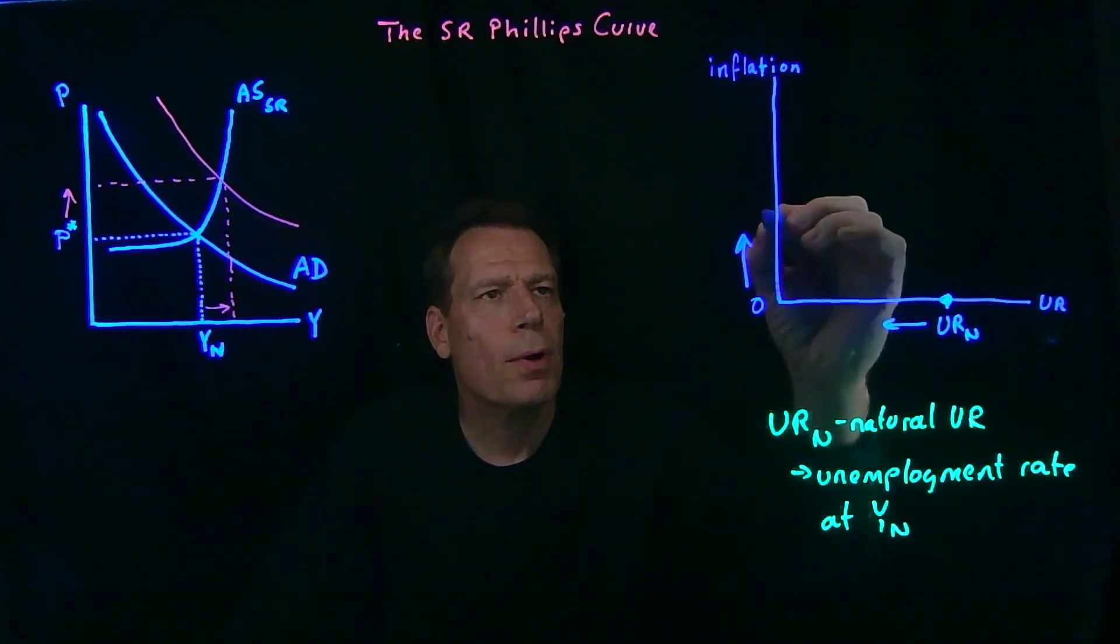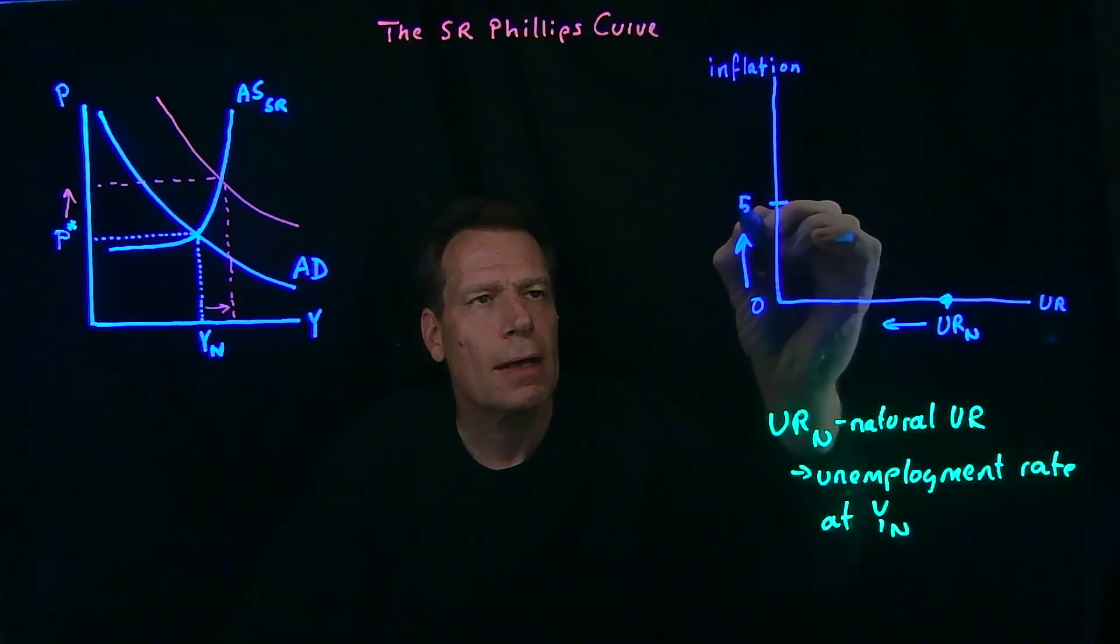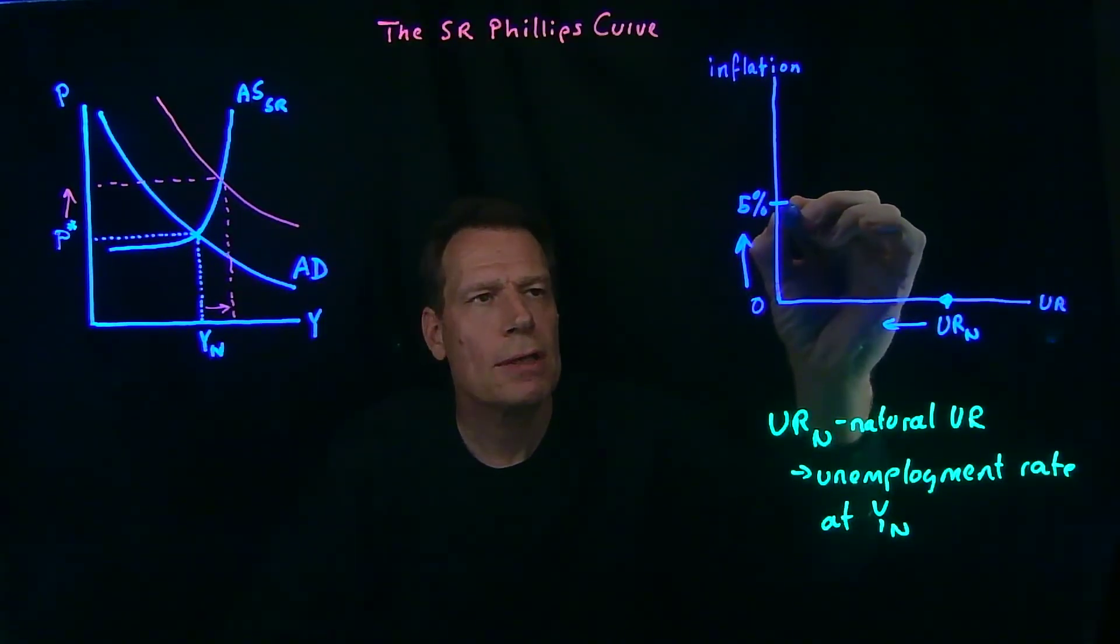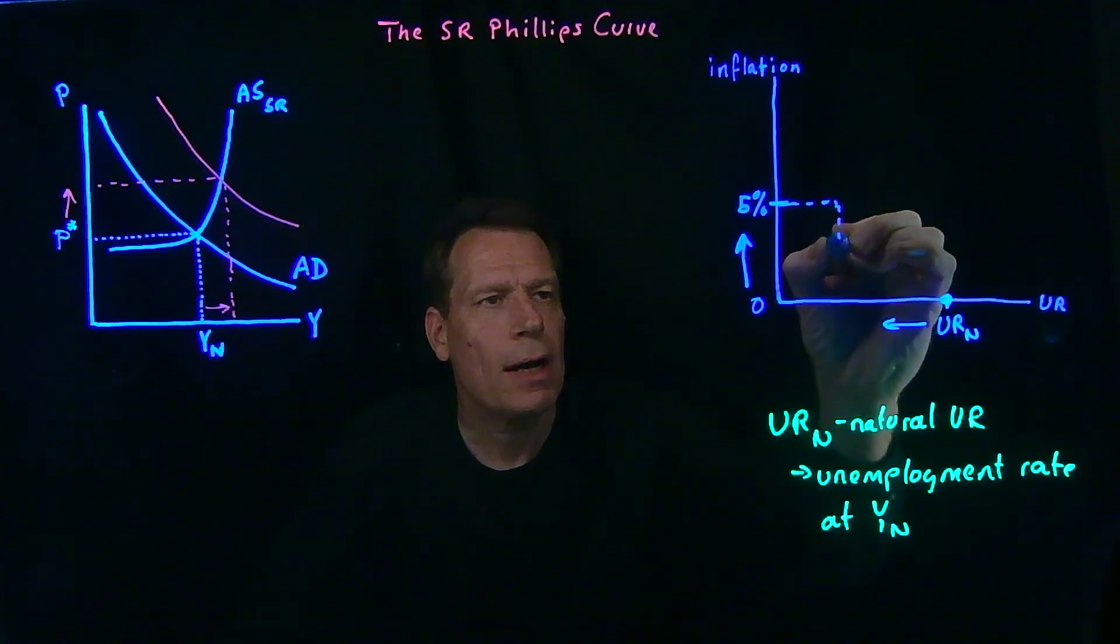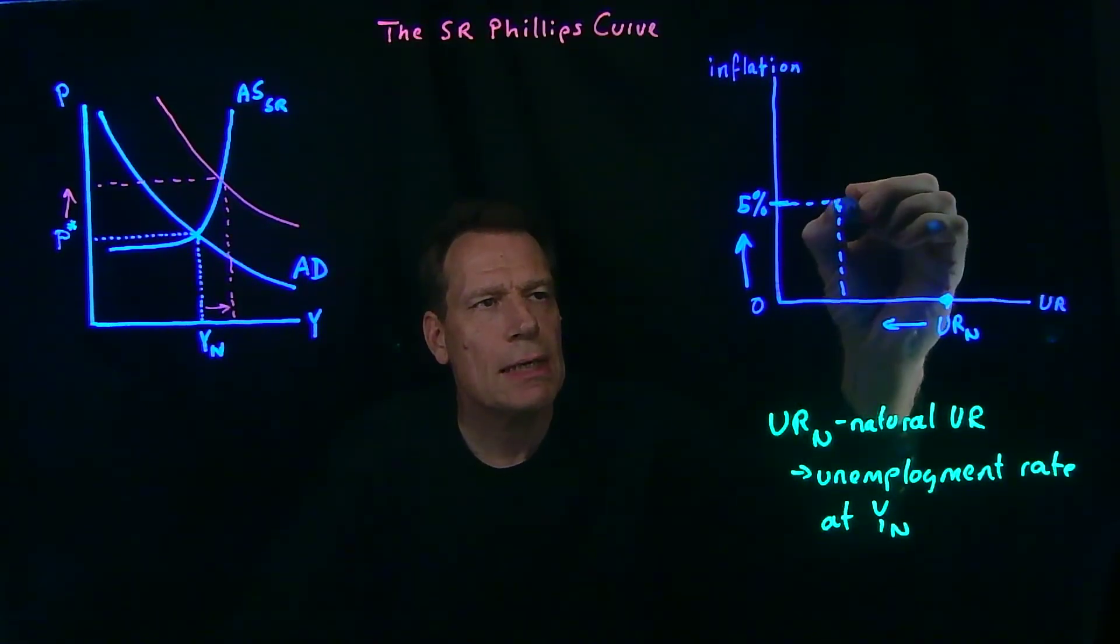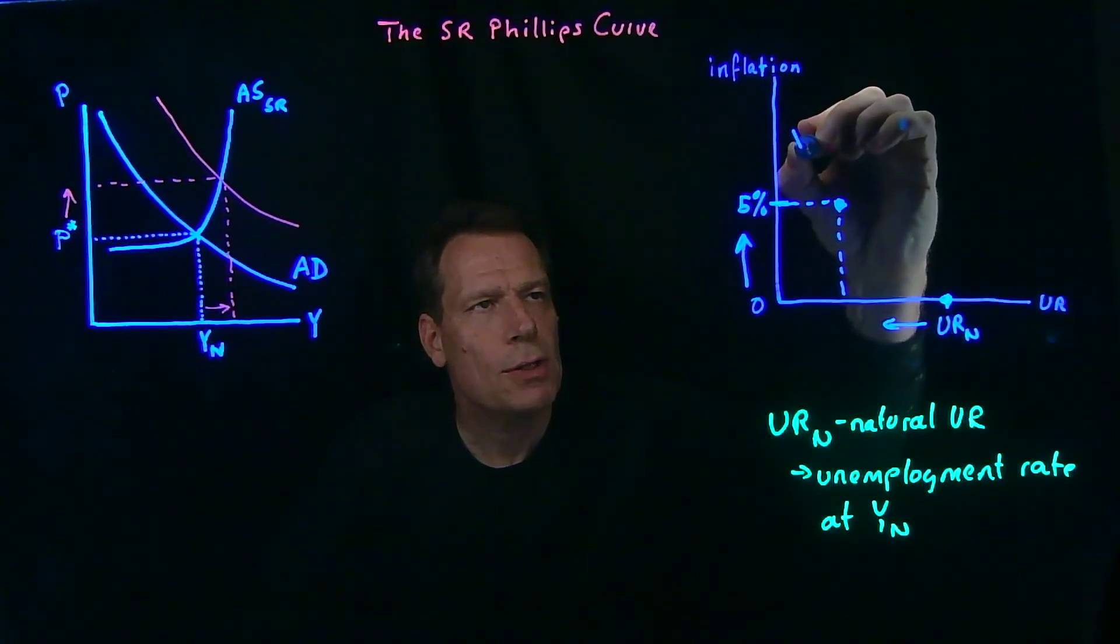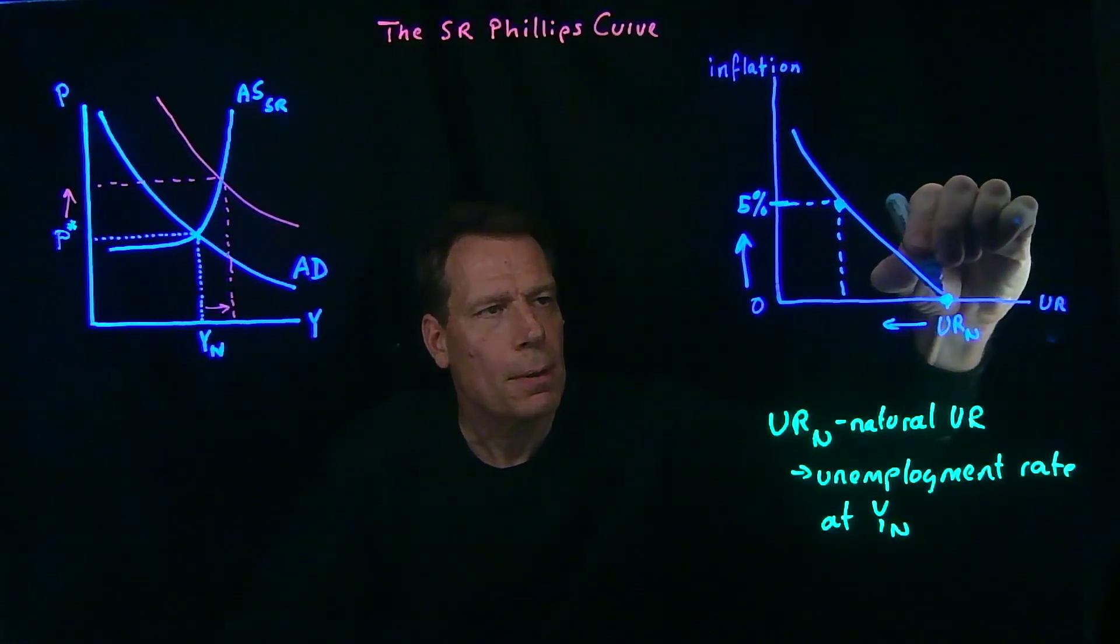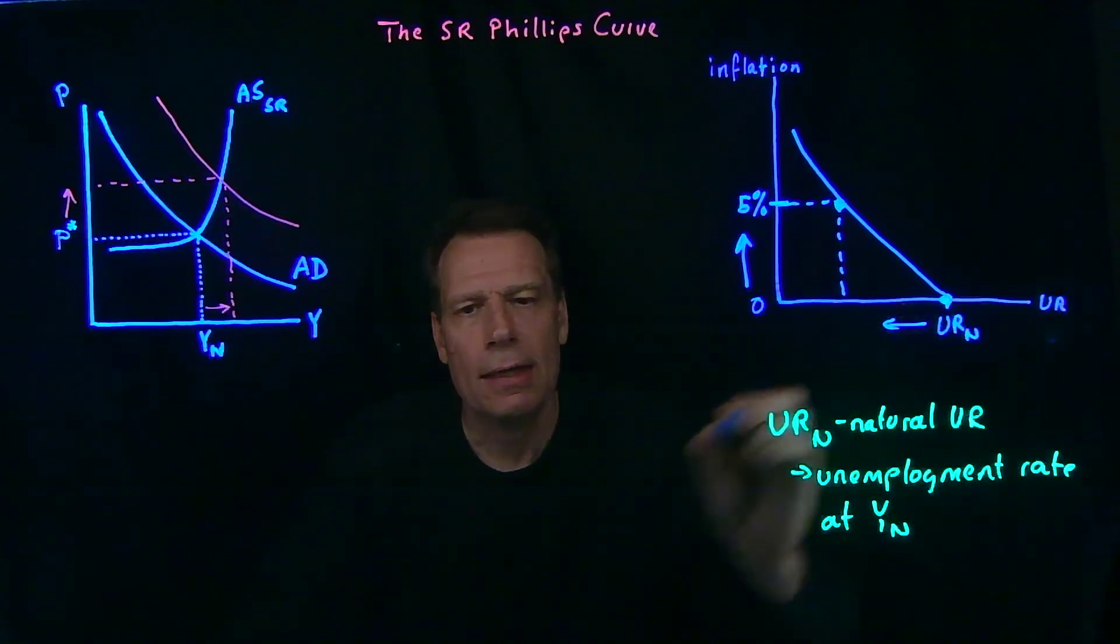So we might get to a point where we're at a 5% inflation rate, but a lower unemployment rate than the one we started with. So we see in this picture a downward sloping relationship emerge between inflation and unemployment.